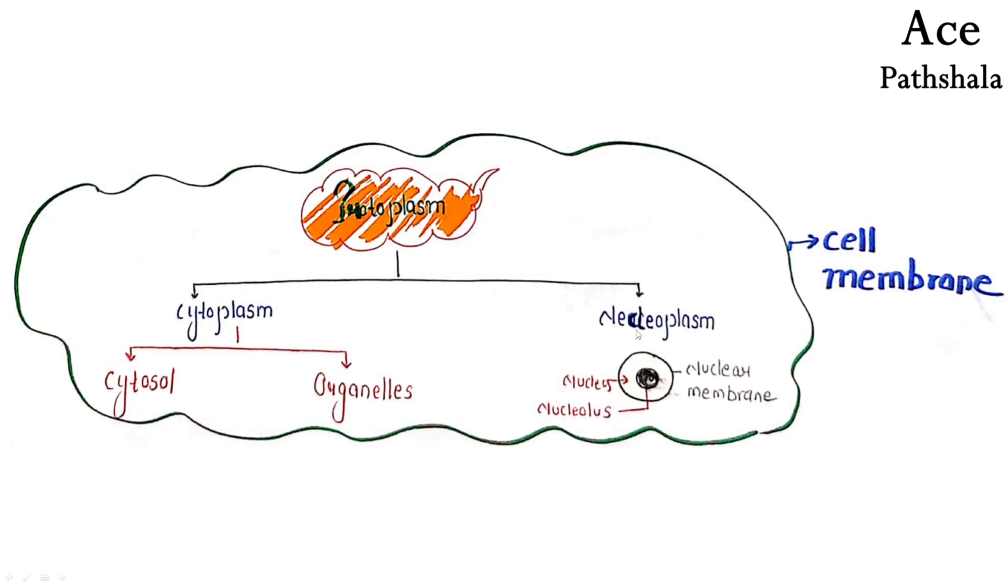Cytoplasm plus nucleoplasm. Now here is present a nucleus. In the cell, it is obvious. In the cell, the nucleus is present. In the nucleus, what is present here? Nucleolus. All these little topics we will see in different videos. In the nucleus, there is nucleolus, nuclear membrane.